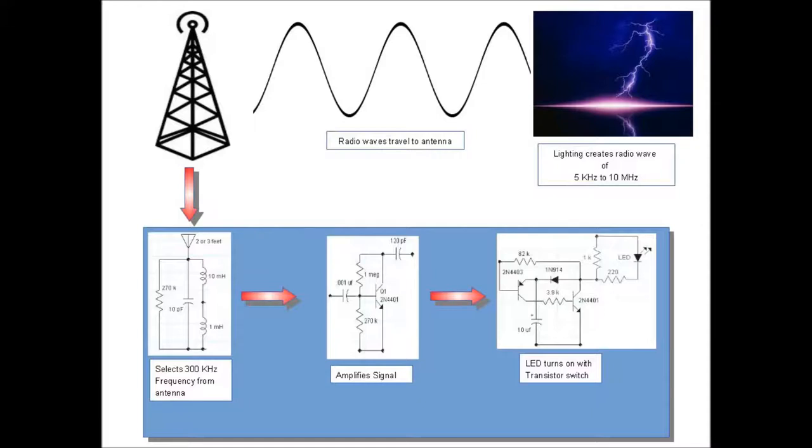From there, a circuit selects a 300 kHz frequency from the antenna and then it amplifies the signal. After that, an LED turns on with the transistor switch.